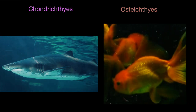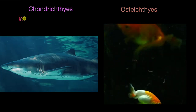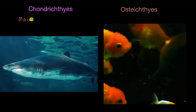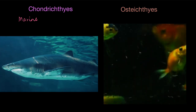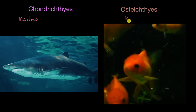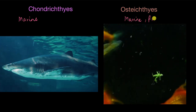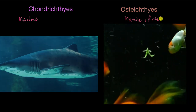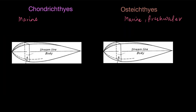All the members of Chondrichthyes, including the great white shark, are marine — that means they live in the seas and in the ocean. Whereas in Osteichthyes you find both marine and freshwater varieties.